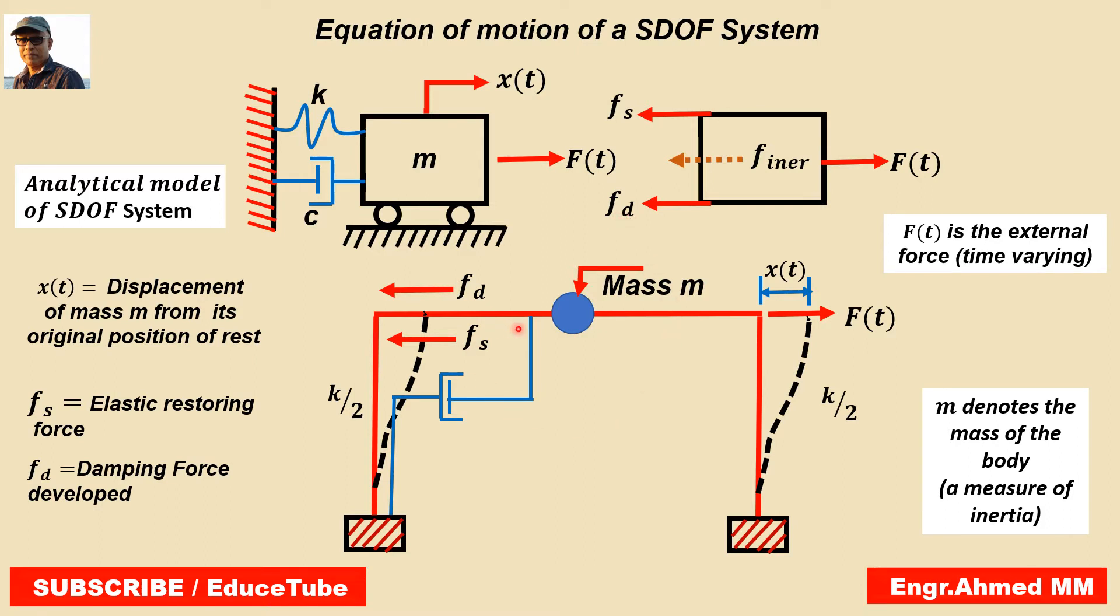Now let us consider the development of a mathematical model for a lateral load analysis of a simple portal frame. Here are two columns and a slab. This line represents the slab and beam, and these two lines represent the columns.